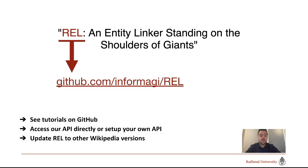We encourage everyone to go to our GitHub page at github.com/informaji/rel. There you will find tutorials to use our API directly, or to set up your own API or integrate REL into your existing pipeline. Developing your own API also enables you to create custom modules such as mention detection modules, update REL to other Wikipedia versions, and train your own entity disambiguation models.